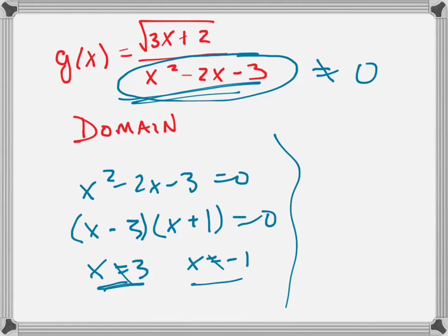The second restriction has to do with the square root. What are you not allowed to have underneath the square root? A negative number. You can't have a negative number. So this underneath here has to be greater than 0, greater than or equal to 0.